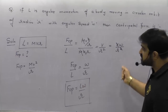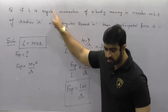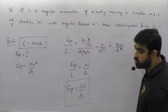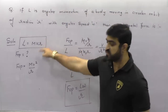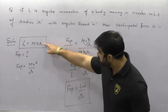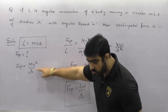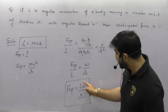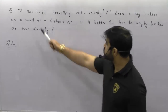Whenever they give you one quantity and ask you another quantity, always try to divide between both of them. Write the formulas and divide both of them — you will get a relation between them.